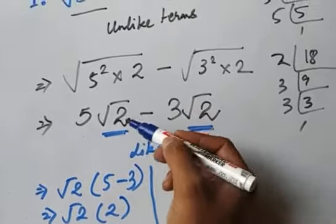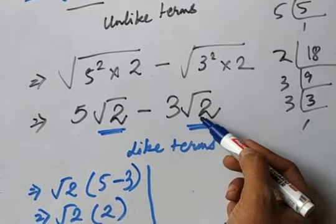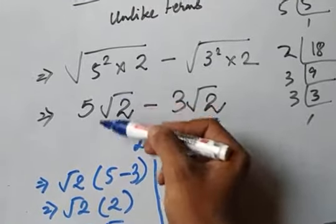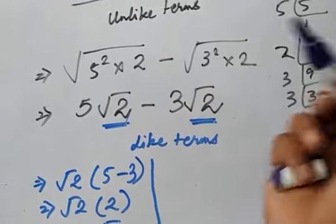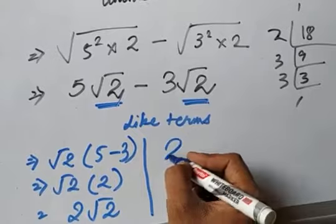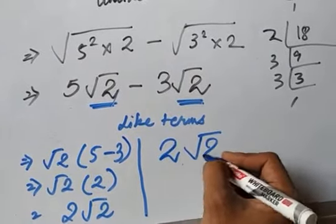Or you consider this like 5x minus 3x, because this is considered as a variable here. So 5x minus 3x will give you 2x. It's just like that, it will give you 2 root 2 also directly.